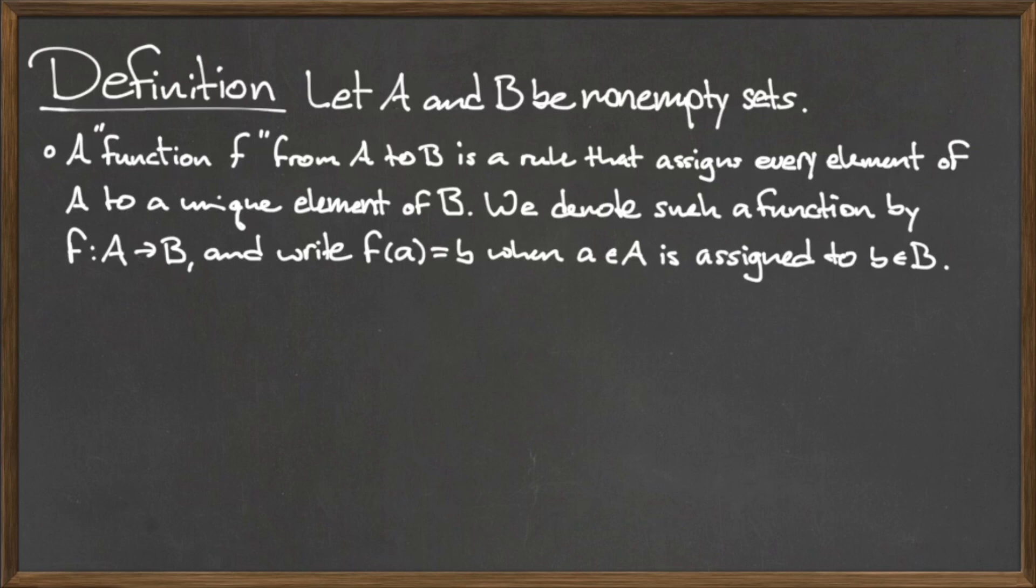We denote a function from A to B like this. And when referring to element assignment, we write f(a) = b when we assign the element little a in the set capital A to the element little b in the set capital B.